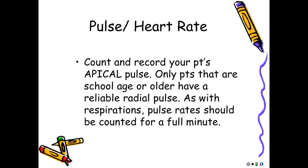When counting heart rate in small children, always do it apically — never radial on small children. Brachial pulses are used to check if they have a pulse during code blues, but for heart rates, apical is the way to go. It's not until they hit school age that you can count on the radial pulse being reliable. For anyone under age five, at least your first vital of the day should be apical.